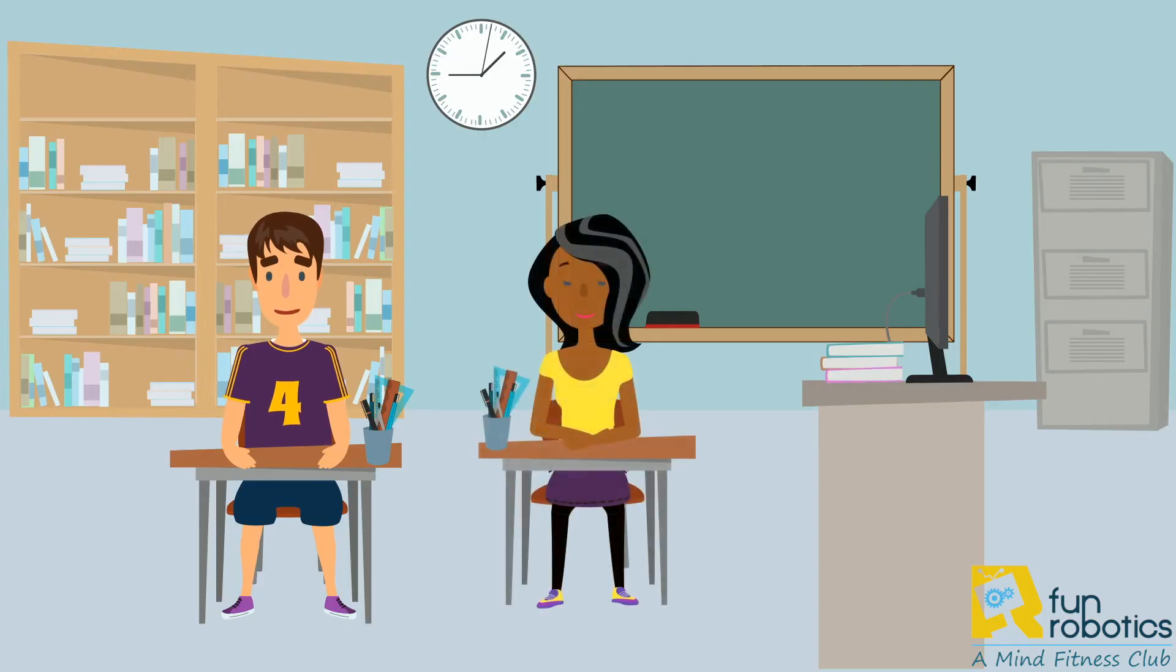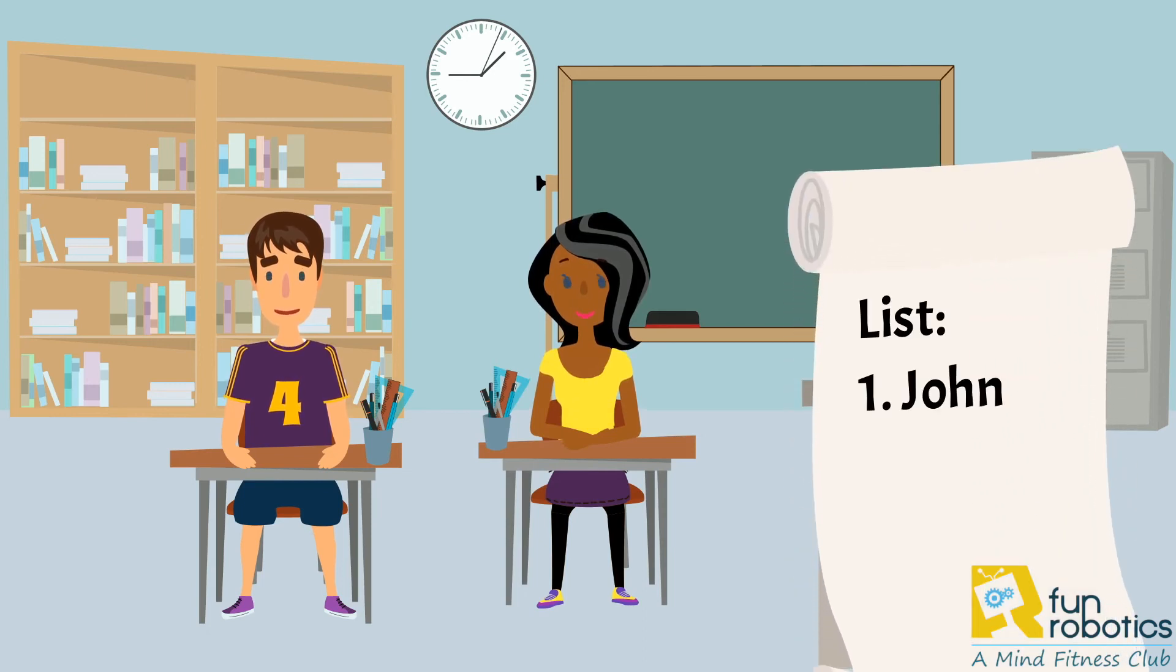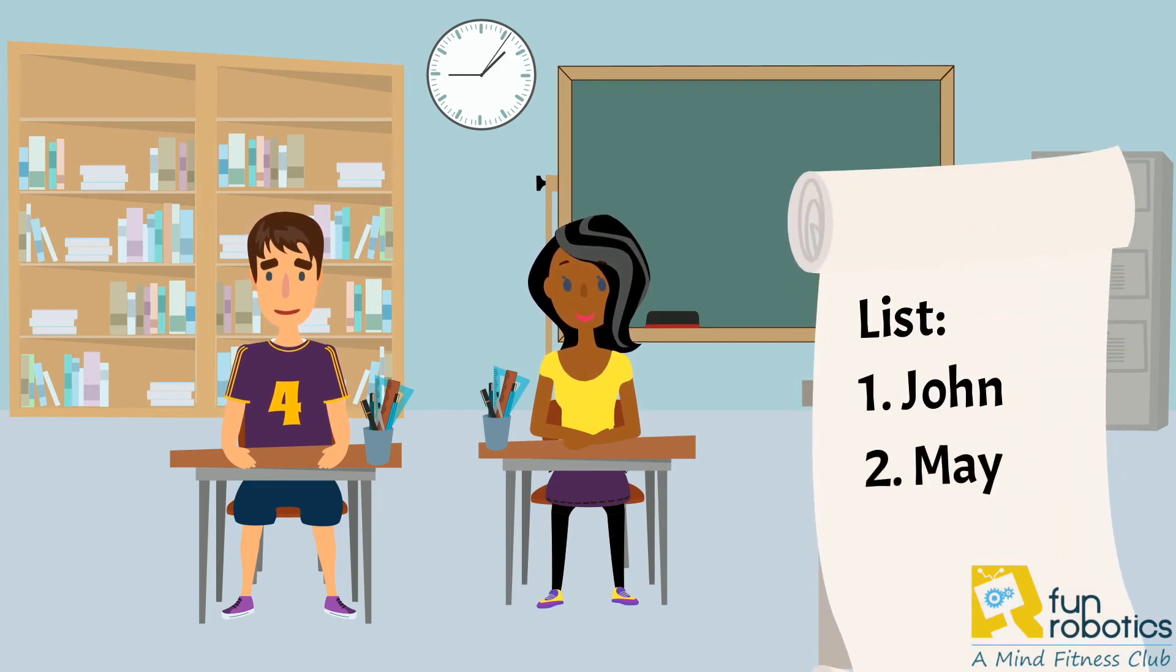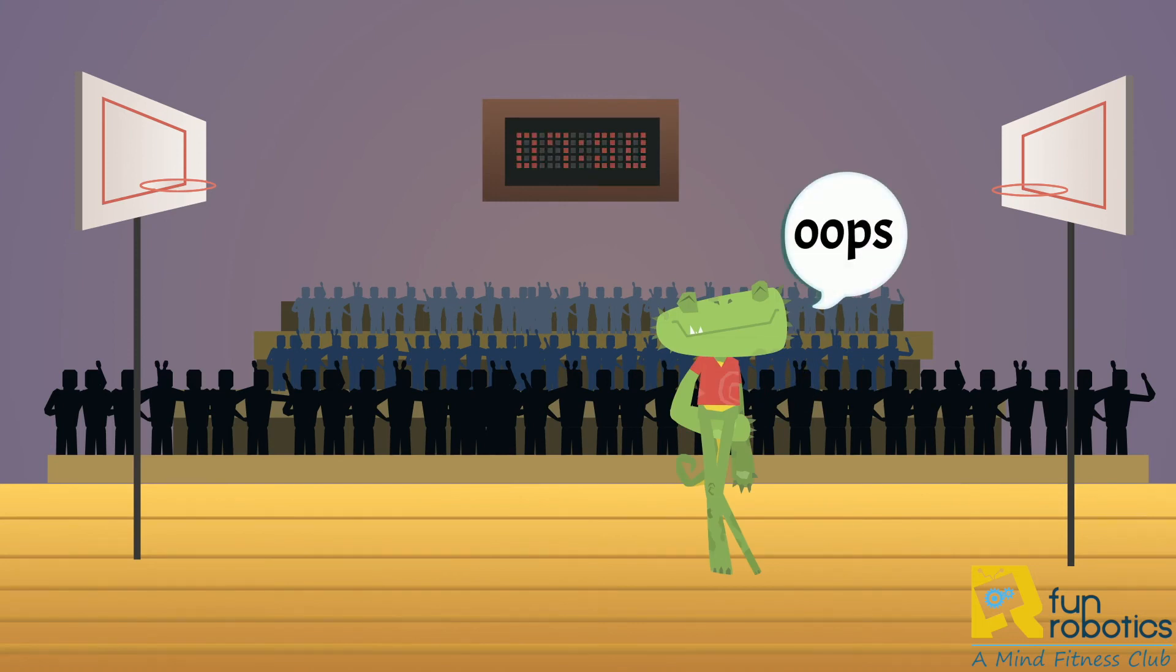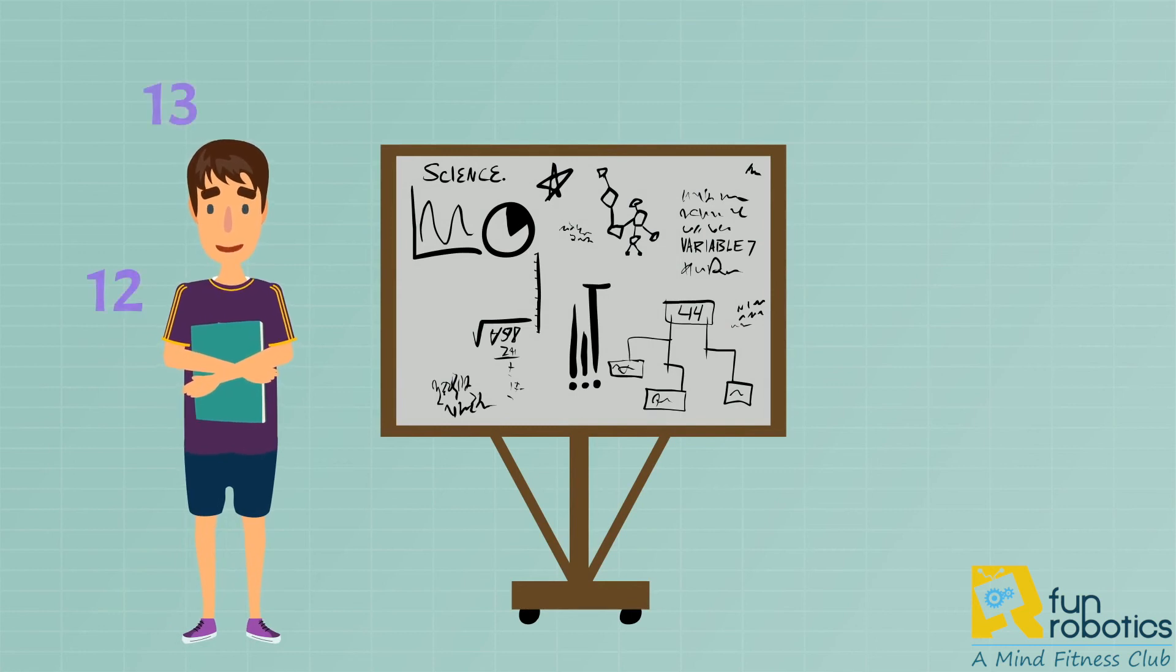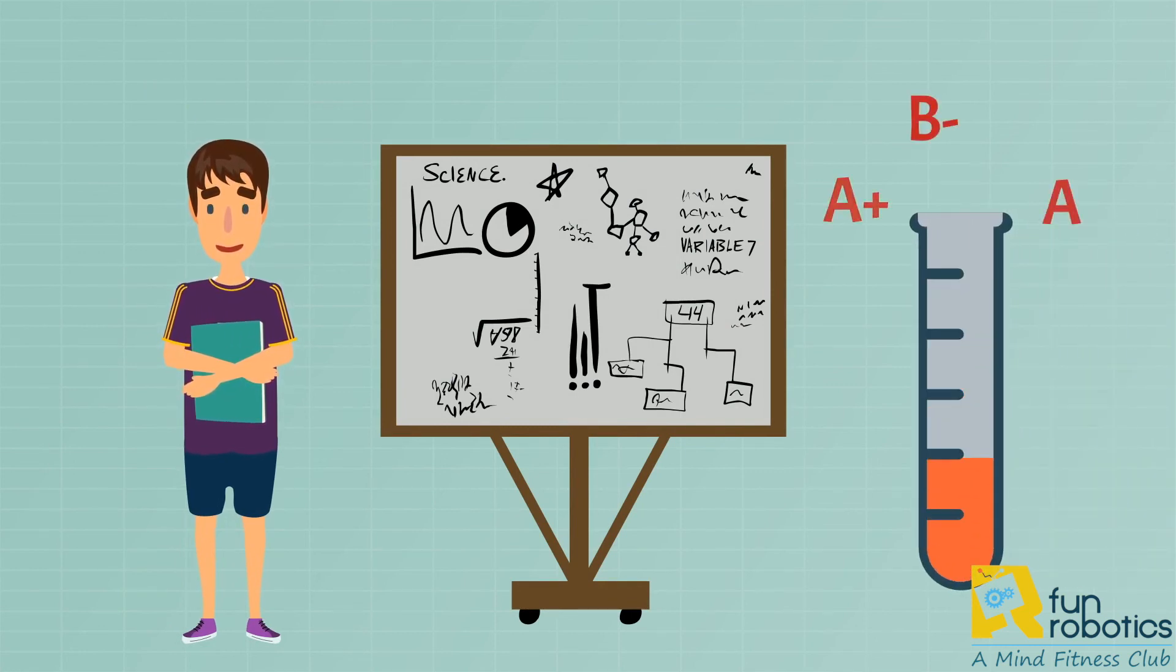If you think about it, you can find so many variables that keep on changing all the time around us. Your score in a game is a variable since it may change at any moment. Your age is a variable that increases every single year. And your grade in science is a variable too which could be different in every single test.